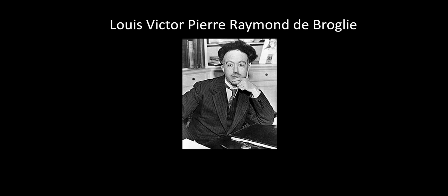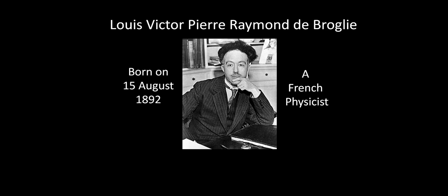De Broglie — full name Louis Victor Pierre Raymond de Broglie — was a French physicist born on 15th August 1892, and received the Nobel Prize in Physics in 1929.